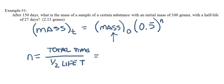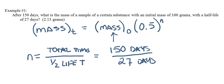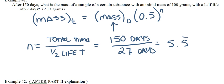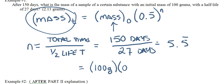n is equal to the total time over your half-life period of time. So if we know the total time, which in this case is 150 days, and we know our half-life is 27 days, that will tell us how many half-lives have actually taken place. And on my calculator, it says 5.5 and that's repeating. So we know what our number of half-lives is.